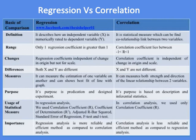The regression coefficient can be greater than one, while the correlation coefficient lies between minus one and plus one. The regression coefficient is independent of change in origin but not for scale, while the correlation coefficient is independent of change in both origin and scale.